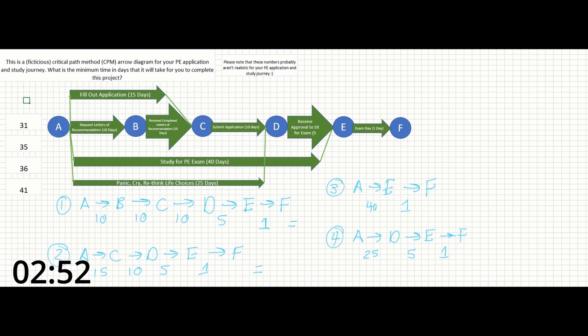So if we sum up our different paths here, we can see that the first one is 36 days, the second one is 31 days, the third one is 41 days, and the fourth one is 31 days.